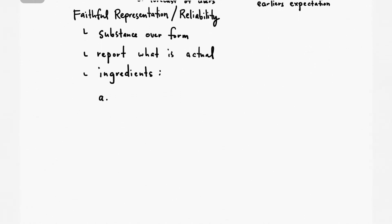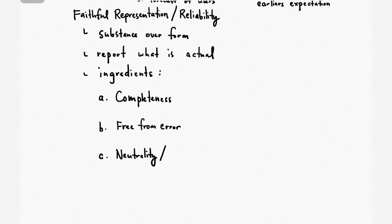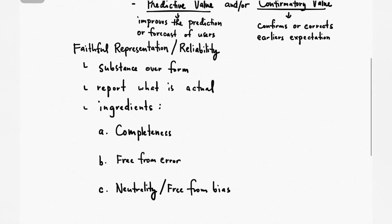To do that, we need to know the ingredients of faithful representation. We have three: completeness, free from error, and neutrality — also called free from bias. The information is complete if all necessary information are there. The information is free from error if there is no error or omission in how you describe the information. There is neutrality or free from bias if the information does not favor a specific group. So these three — completeness, freedom from error, and neutrality — make the information faithfully represented.